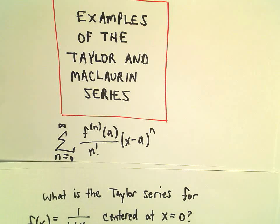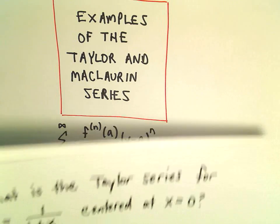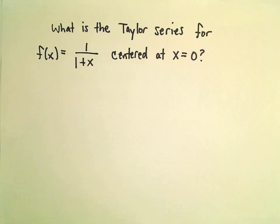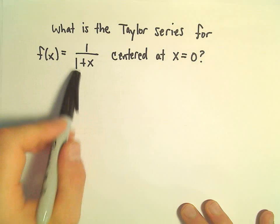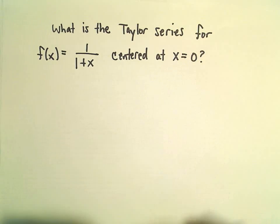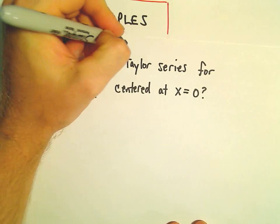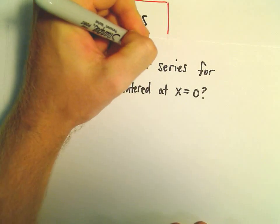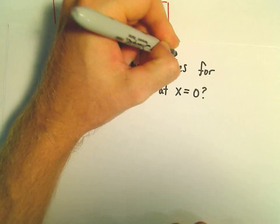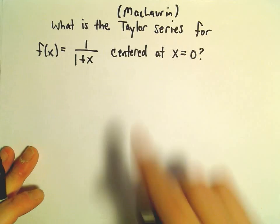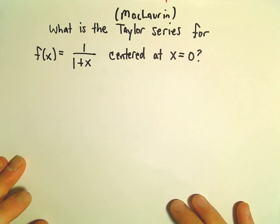Alright, so another example of finding a Taylor series here. We're going to find a Taylor series for f(x) = 1/(1+x) centered at x = 0. So we could also just call this a Maclaurin series. A Maclaurin series is just a special case of a Taylor series.